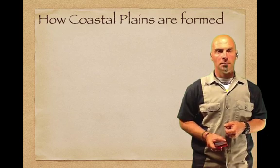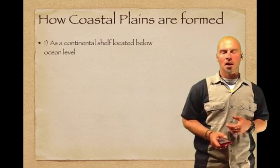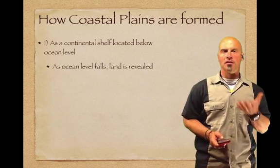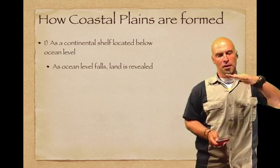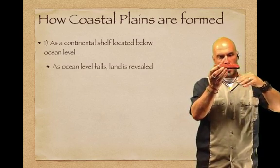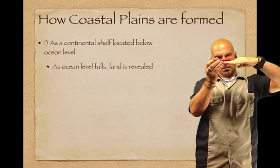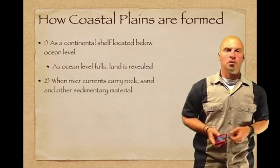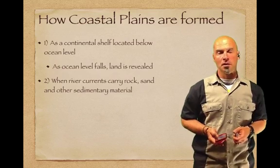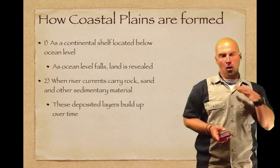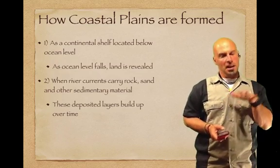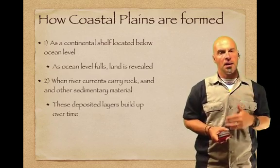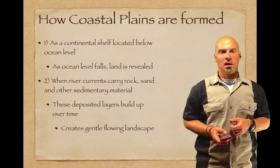So how are coastal plains formed? The first way is as a continental shelf located below the ocean level. As the ocean level falls, the land is revealed — and you've got yourself a coastal plain. The second way is when river currents carry rock, sand, and other sedimentary material. All that sediment is deposited, builds up in layers over time, rises above the water, and creates a gentle flowing landscape — a coastal plain.